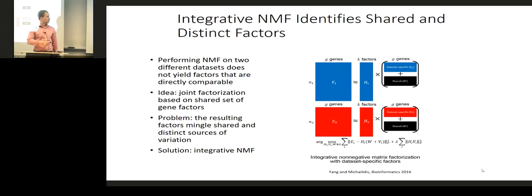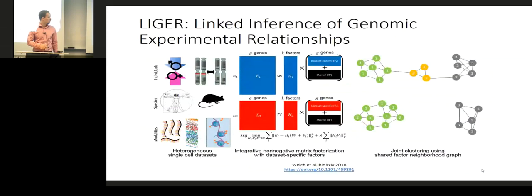Before trying iNMF, we tried simply stacking our datasets and performing regular NMF on them. We found that this didn't work because some resulting factors essentially captured 'is this from dataset A or dataset B?' and the rest had mingling of shared and distinct sources of variation. Explicitly separating out dataset-specific effects allows us to much more accurately identify corresponding factors of variation. We used this integrative NMF in LIGER and developed an additional approach that performs robust joint clustering using a shared factor neighborhood graph across datasets, allowing us to robustly identify shared and dataset-specific populations.